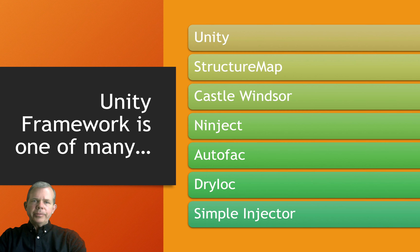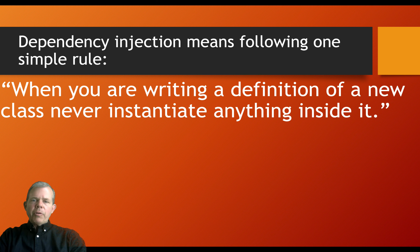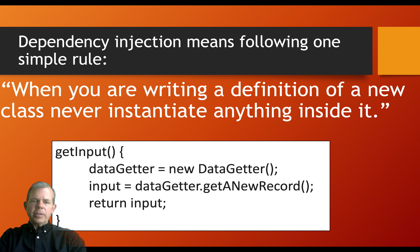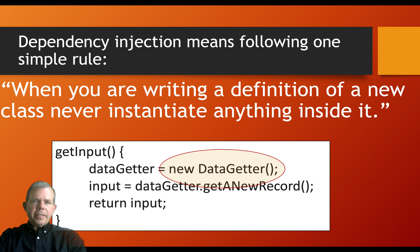Dependency Injection means that you simply follow one rule: when you are writing a definition of a new class, never instantiate anything inside of it. For example, look at this code. Inside of this method, there is a class being instantiated called DataGetter. This is the type of model we're trying to avoid — this is tightly coupling two classes together where one completely depends on the other.